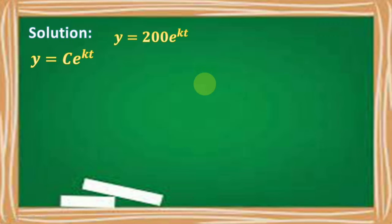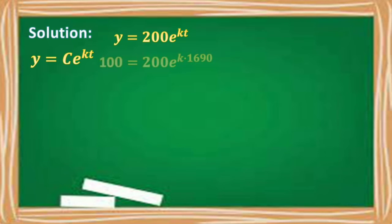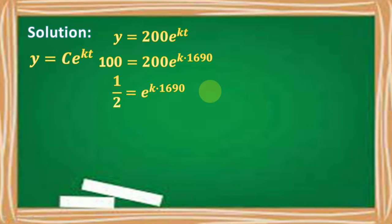A half-life of 1,690 years means the initial 200 grams of radium will reduce to half, or just 100 grams. Therefore, 100 = 200 · e^(k · 1690). Dividing both sides by 200, we get 1/2 = e^(k · 1690).